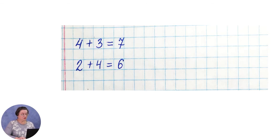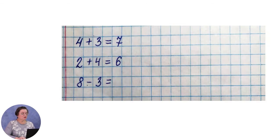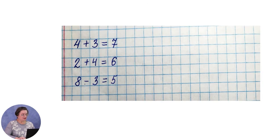Ниже, через одну клетку, пишем следующий пример: 8 минус 3. Смотрим внимательно: какое арифметическое действие? Молодцы — вычитание. Вспоминаем состав числа. 8 — это 3 и сколько? Конечно же, 5. Значит, 8 минус 3 равно 5.